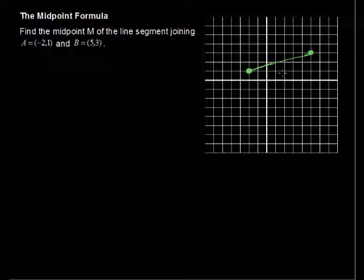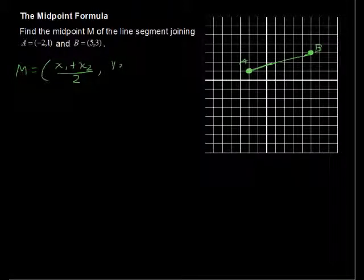The midpoint is halfway from A to B, so somewhere in this area, halfway. Let's find that. The midpoint formula is M has the coordinates of x sub 1 plus x sub 2 divided by 2. That's the x coordinate of the midpoint, and the y coordinate of the midpoint would be y sub 1 plus y sub 2 divided by 2.